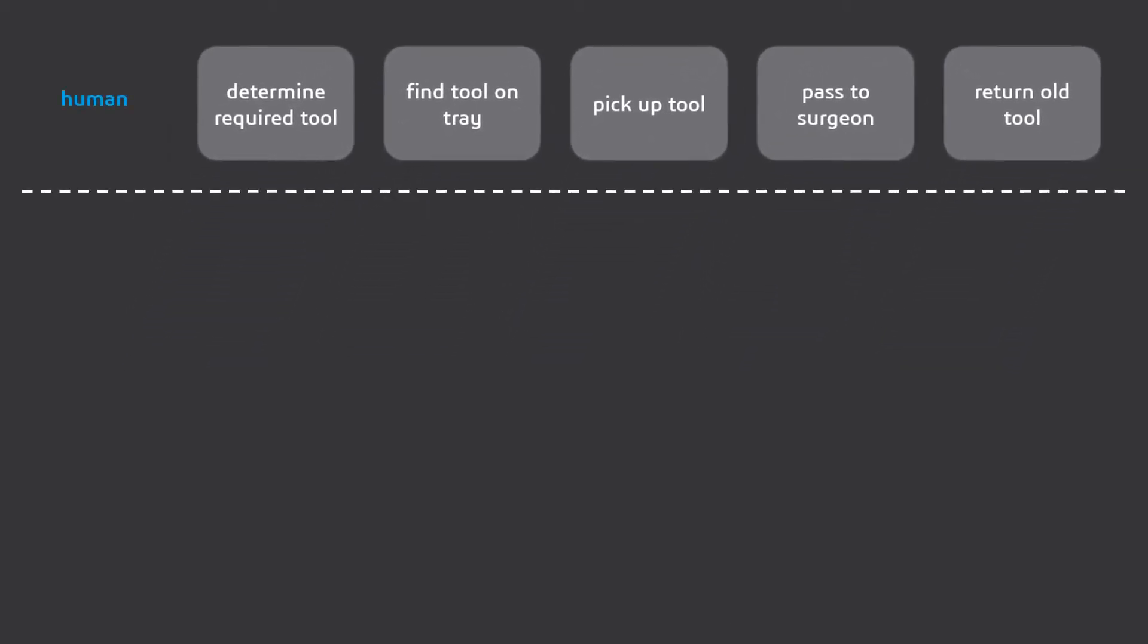Humans can do many complex tasks implicitly, but what is trivial for a human may pose a major challenge for an automated system. For a scrub nurse, the task of passing a tool to a surgeon can be seen solely as the five distinct steps listed previously. However, a more detailed breakdown is required for a robotic system. These details can be achieved by applying different technologies for each high-level step.